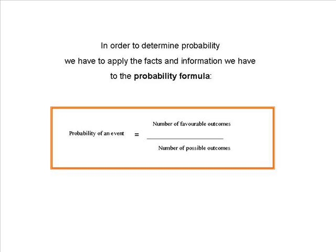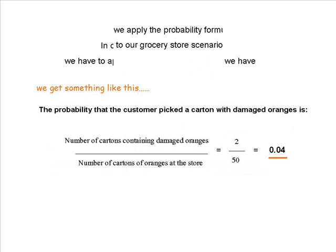In order to determine the probability we have to apply the facts and information we have to the probability formula. The probability formula indicates that the probability of an event equals the number of favorable outcomes divided by the number of possible outcomes.